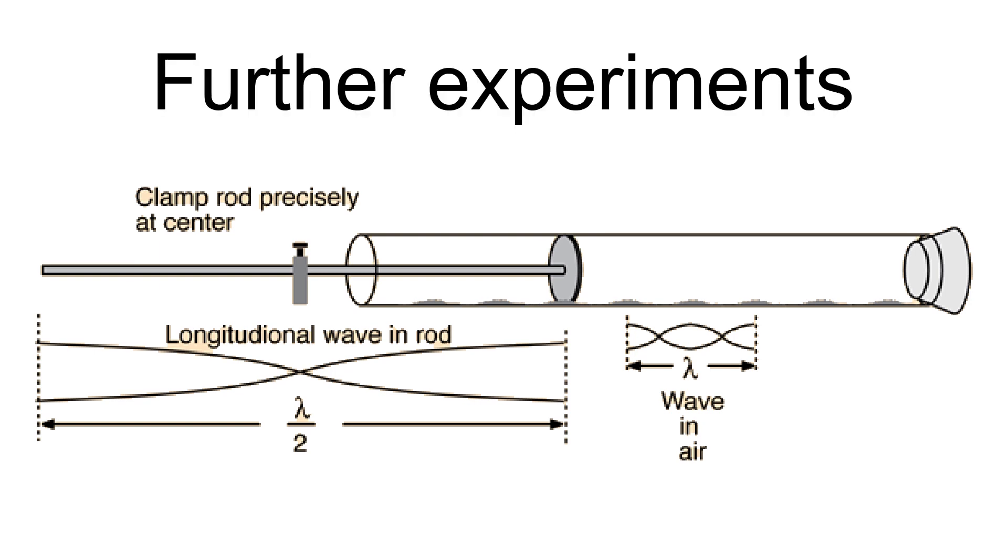By filling the tube with other gases besides air, and partially evacuating it with a vacuum pump, Kundt was also able to calculate the speed of sound in different gases at different pressures.